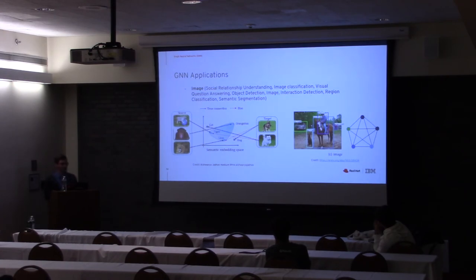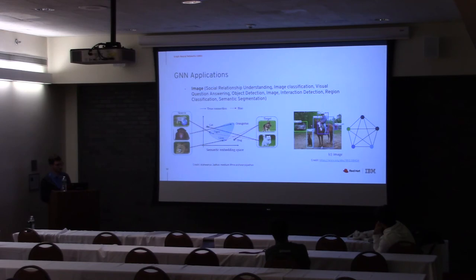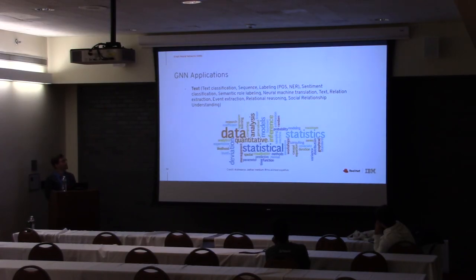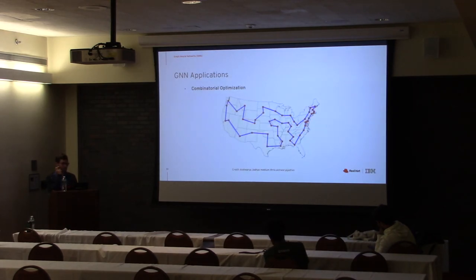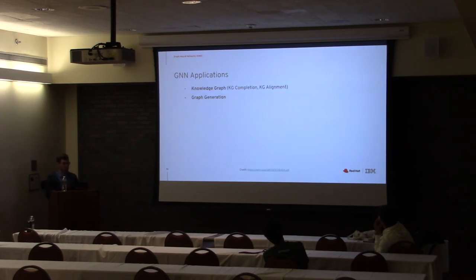Graph neural networks can be applied in almost all the domains we saw for traditional ones. The advantage is the use of graphs which have semantic relationships between nodes, giving much richer representations. They are applied to images, text, neural machine translation, and many other fields. In physics and biology, they are especially important because data about molecules naturally form graphs. They are also used in combinatorial optimization, such as the travelling salesman problem, and in knowledge graphs and graph generation.